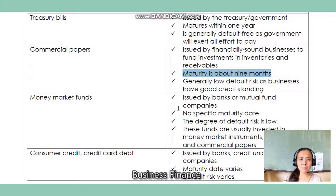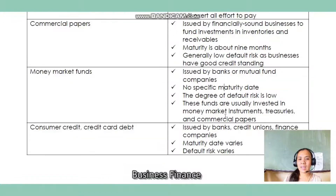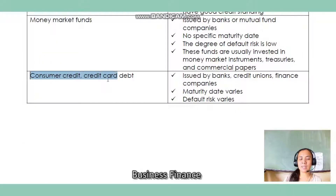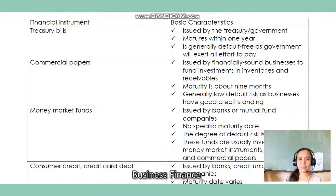Next are money market funds. These are issued by banks or mutual fund companies. There's no specific maturity rate and, just like commercial papers, the default risk is low. These funds are usually invested in money market instruments like treasuries and commercial papers. Last, we have consumer credit card debt. These are issued by banks, credit unions, and finance companies. The maturity date varies and the default risk can be low or high. Note that only government-issued instruments are considered default-free.